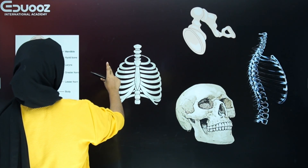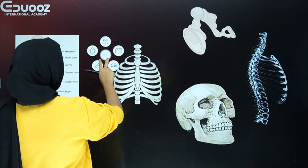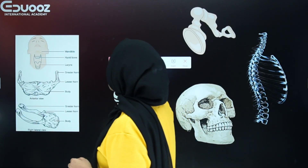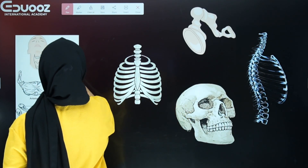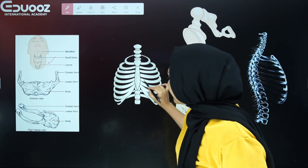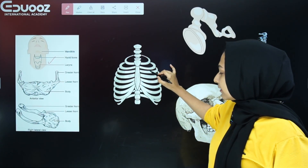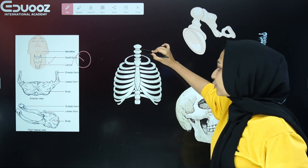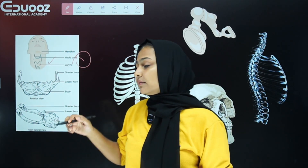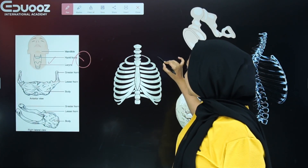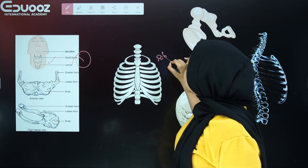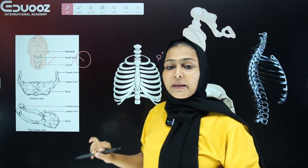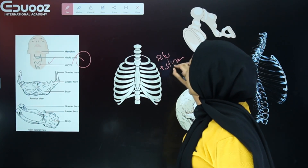Here we have the hyoid bone. It is not a single bone in the usual sense — it is a horseshoe-shaped bone. Then we have the thoracic cage, which includes the ribs. The number of ribs is 12 pairs, which means 24 ribs total.